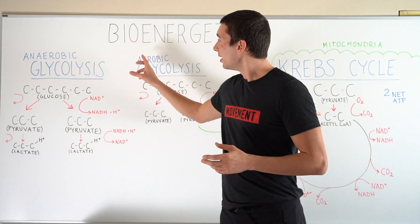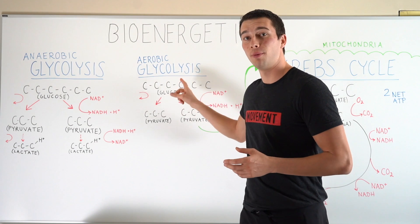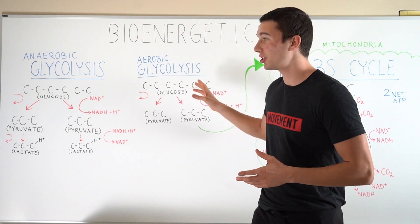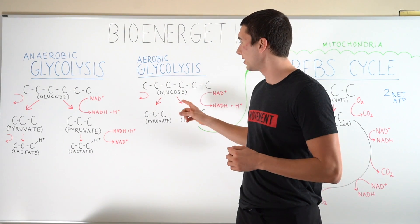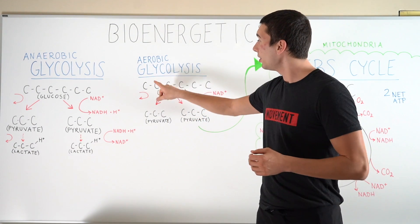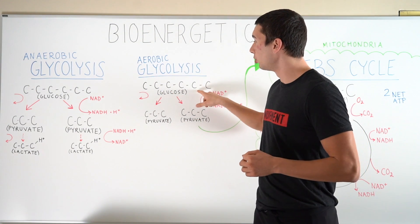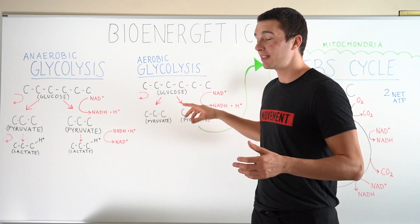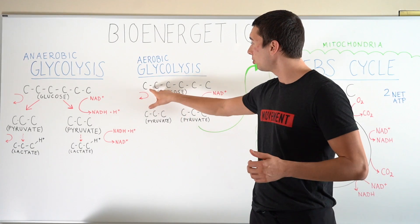So let's talk about aerobic glycolysis first. Some people will call this slow glycolysis. Now we can see here a glucose molecule — it's a six carbon molecule.